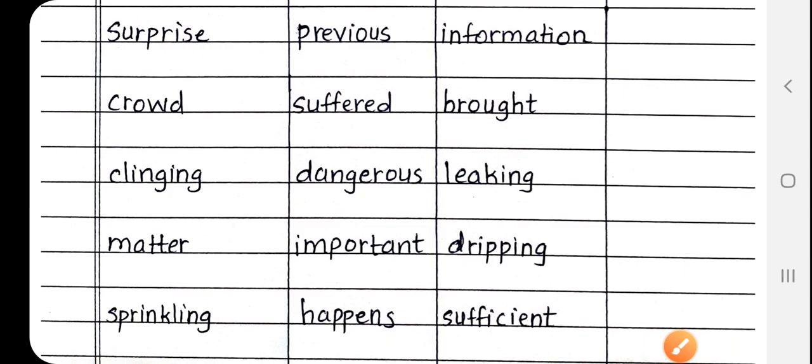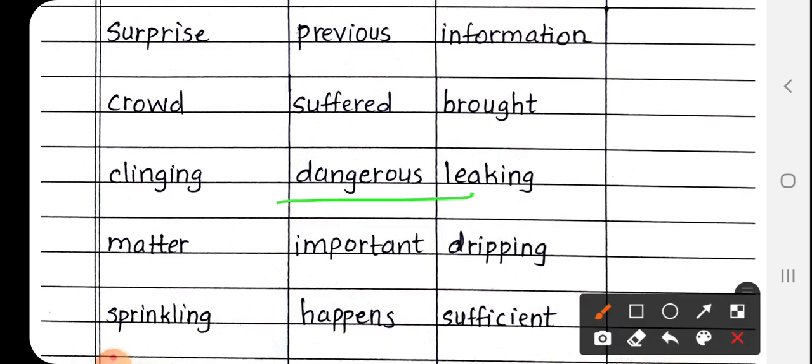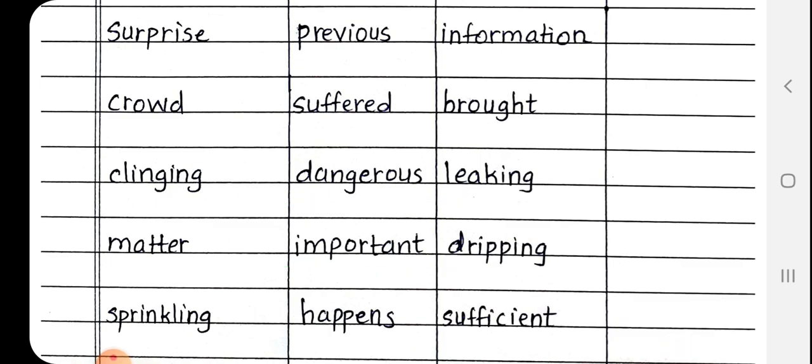Next is dangerous, D-A-N-G-E-R-O-U-S. Dangerous matlab khatarnak. Jo bhayankar hoti hai, khatarnak hoti hai, usse kehte hai dangerous. Next is important, I-M-P-O-R-T-A-N-T. Important matlab mahatvpurna, khas. Usse kehte hai important. Happens, H-A-P-P-E-N-S. Happens matlab hona.